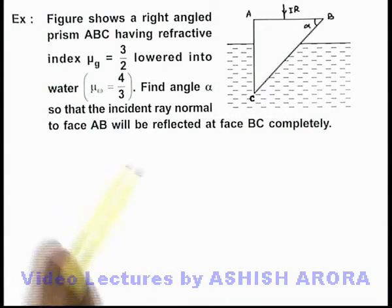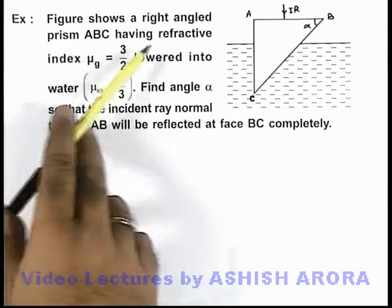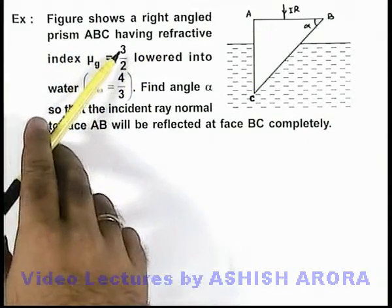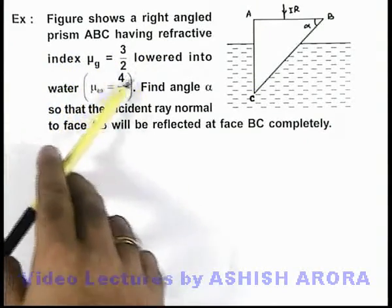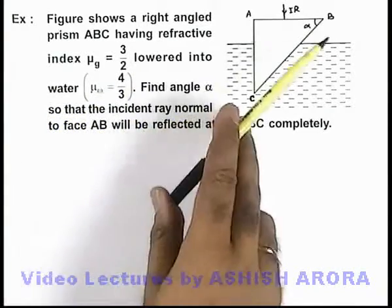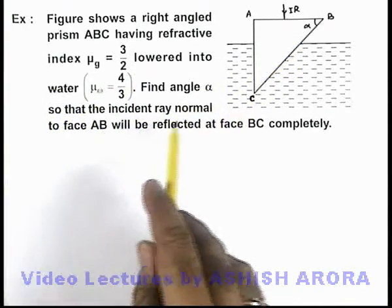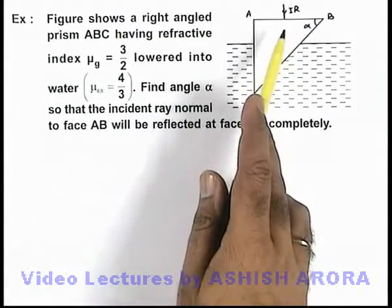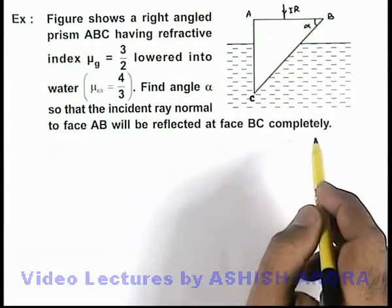In this example, the figure shows a right-angled prism ABC having refractive index 3/2 lowered into water with refractive index 4/3. We are required to find the angle alpha so that the incident ray normal to face AB will be reflected at face BC completely.